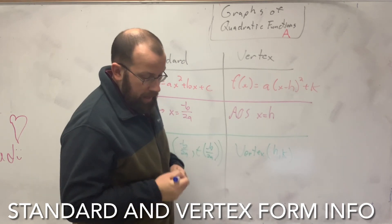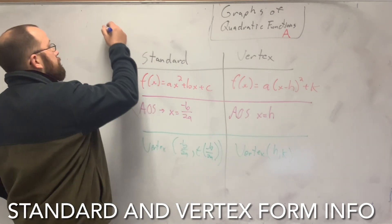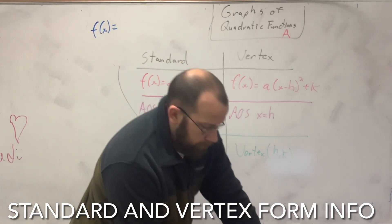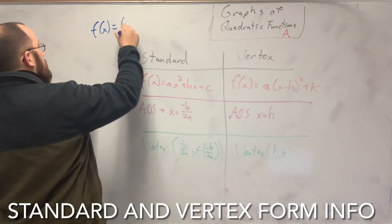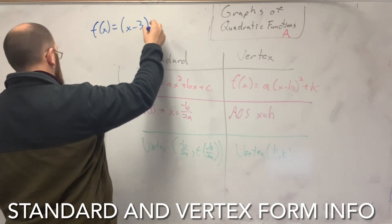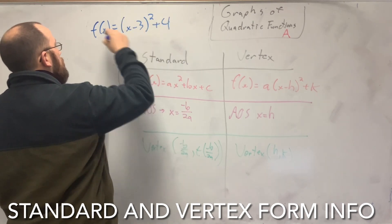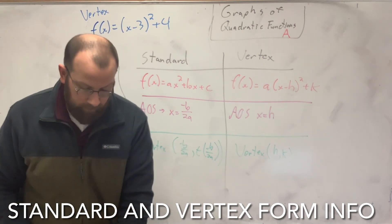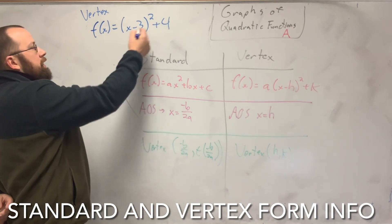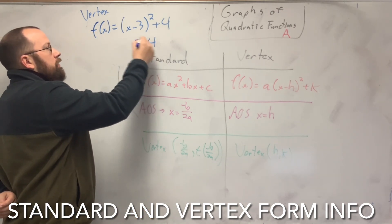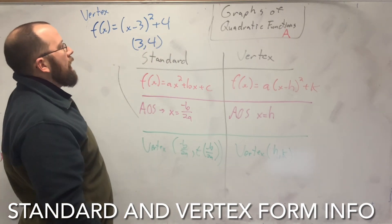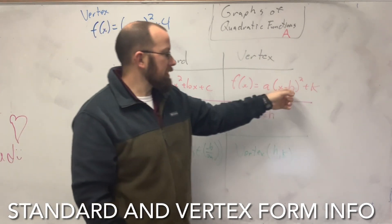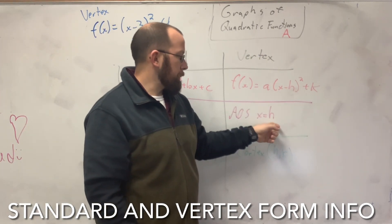So if I had f(x) equals x minus 3 squared plus 4, what is the vertex there? The vertex here is (3,4). You have to change the sign of whatever your x is here. Since it's negative in here, it's going to be positive out here.